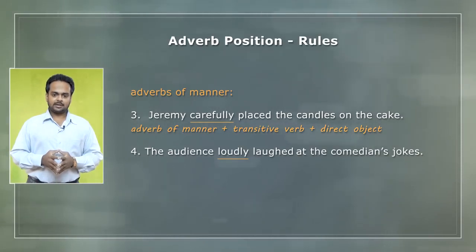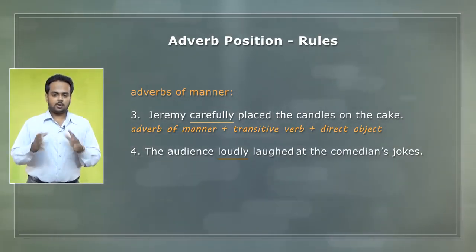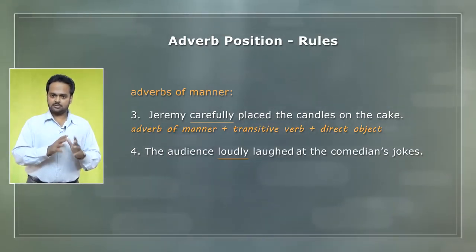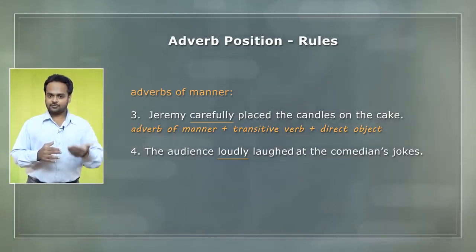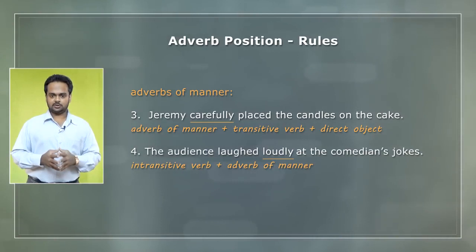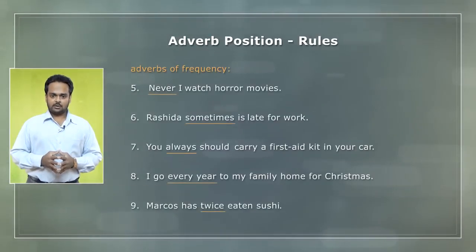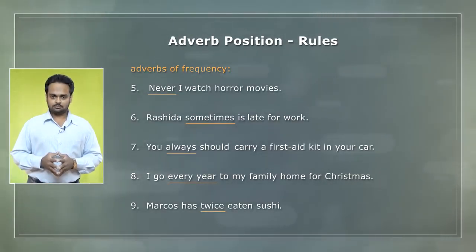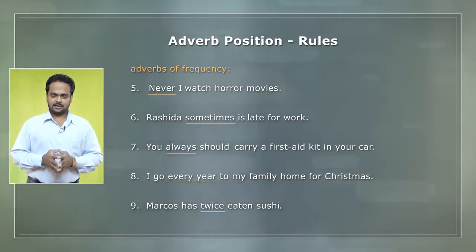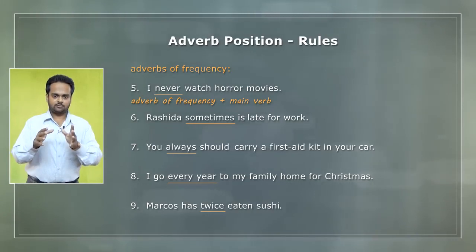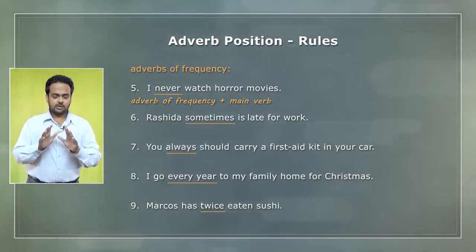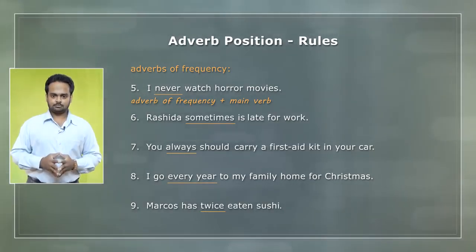In number four we have an intransitive verb – the verb laugh does not have an object. With intransitive verbs, we put the adverb of manner after the verb – the audience laughed loudly at the comedian's jokes. Now let's turn to adverbs of frequency. In number five, the problem is that frequency adverbs like always and never usually go in the middle position – between the subject and the verb – so I never watch horror movies. Some frequency adverbs like sometimes or often can go at the beginning or end in some situations, but usually we put frequency adverbs in the middle position, before the main verb.